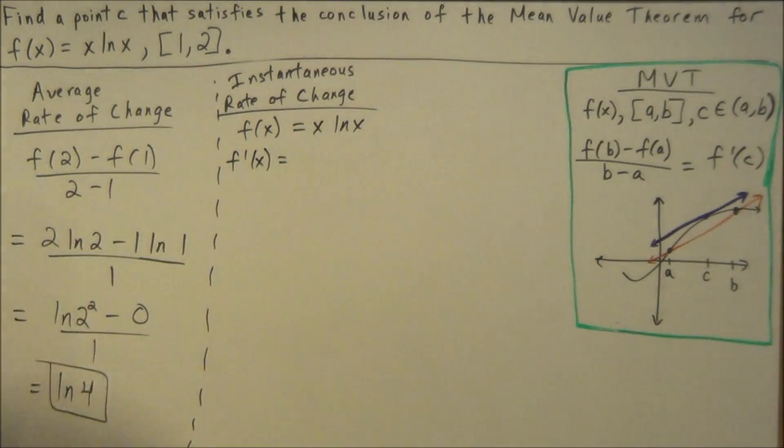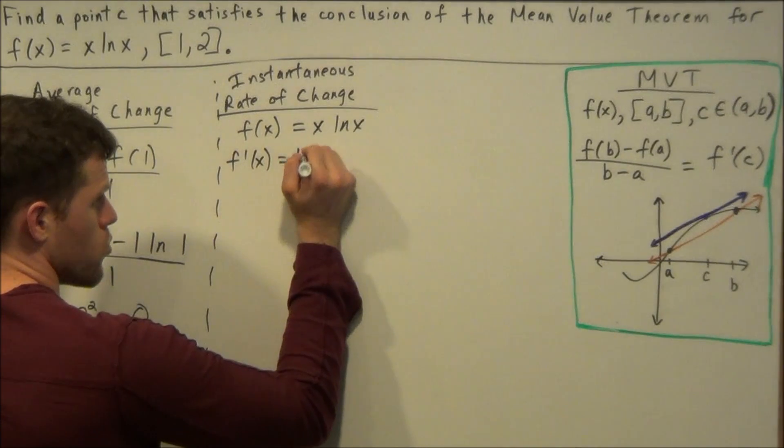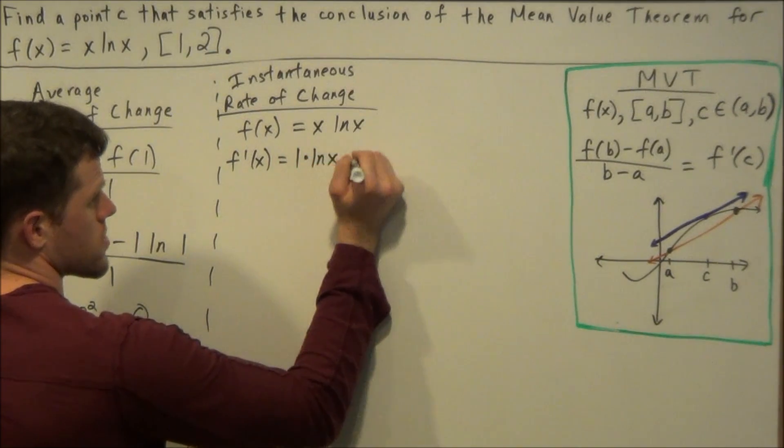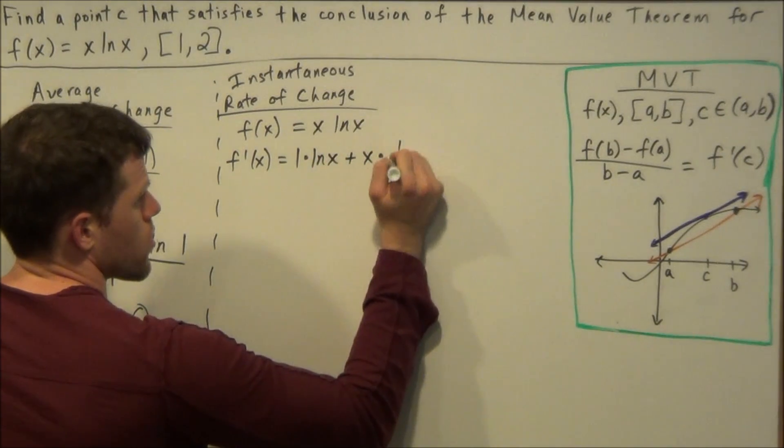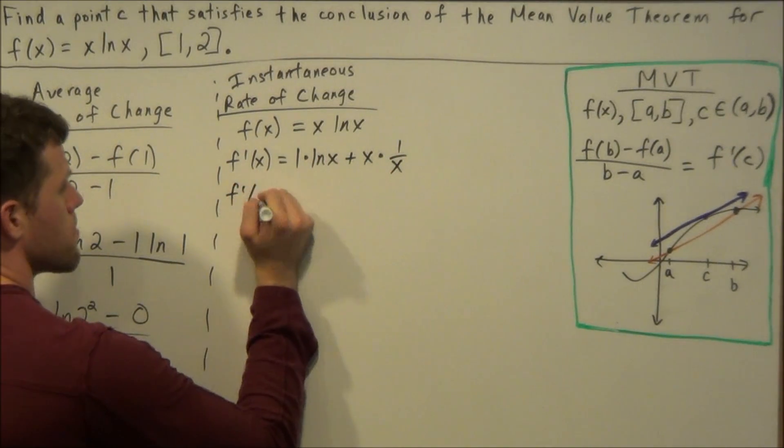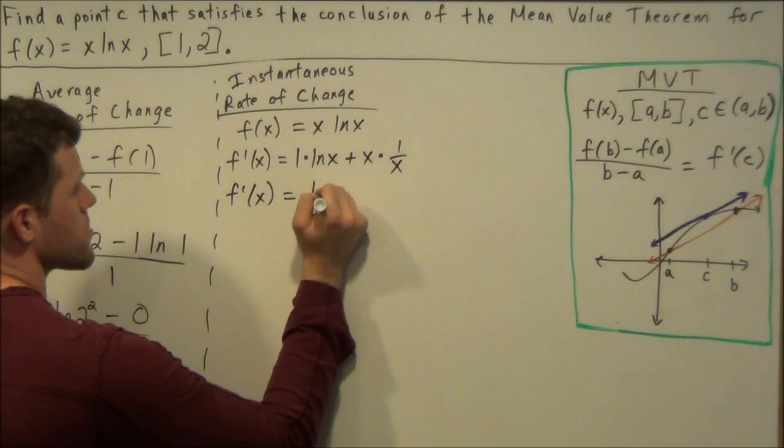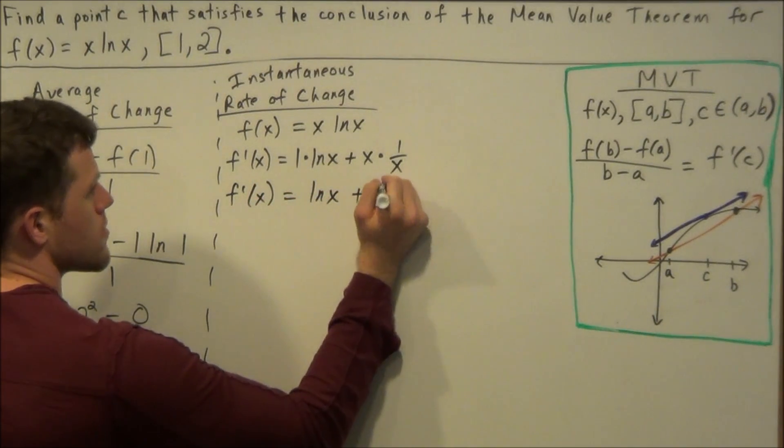So to find this derivative, we need to use product rule, and we have the derivative of x is 1 times natural log x plus x times the derivative of natural log x is 1 over x. So we clean this up a bit.